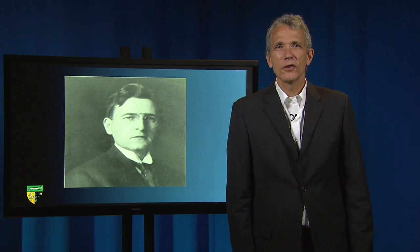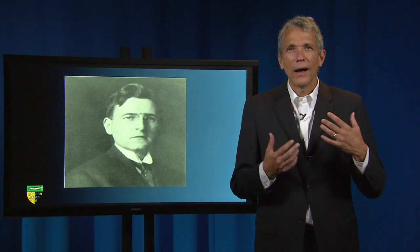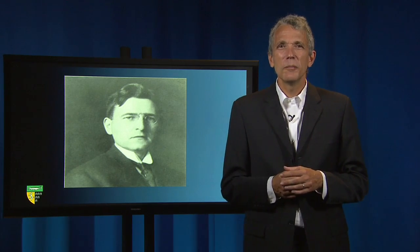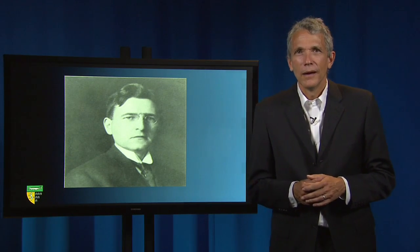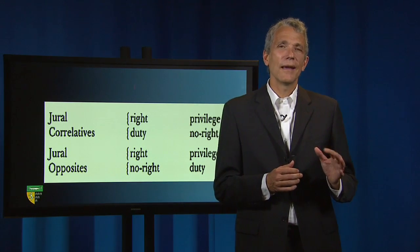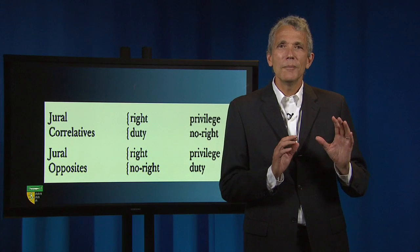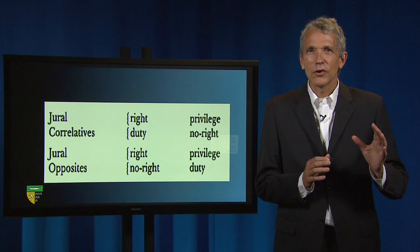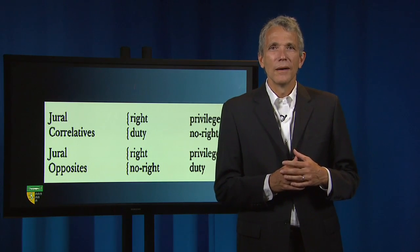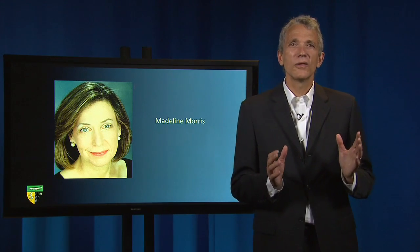In this introduction to Hohfeld's theory, I'll be focusing on the distinction between a Hohfeldian right and a Hohfeldian privilege. This distinction is captured in the following table. To demystify this non-intuitive framing, let me turn to an extended description by Duke Professor Madeline Morris from her article, The Structure of Legal Entitlements.